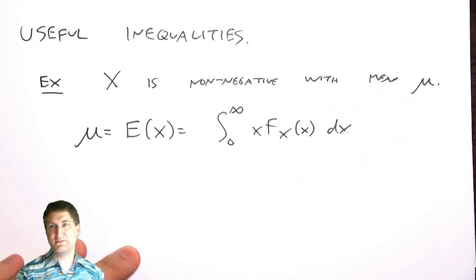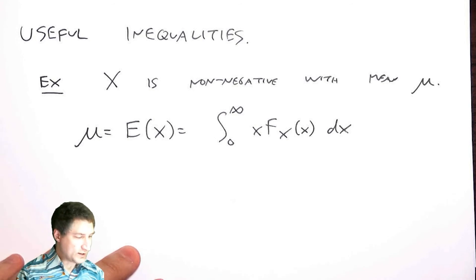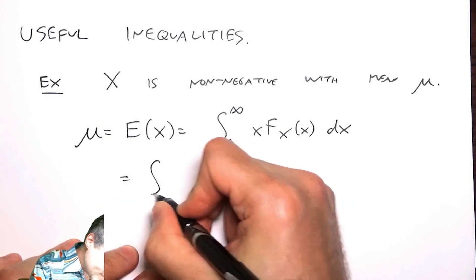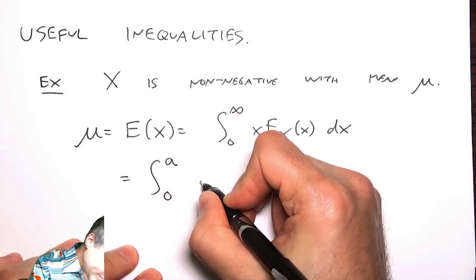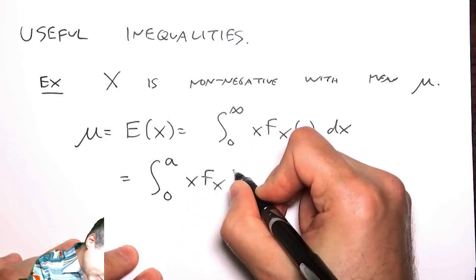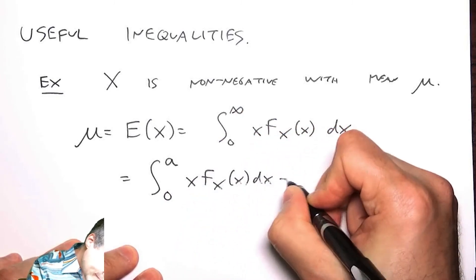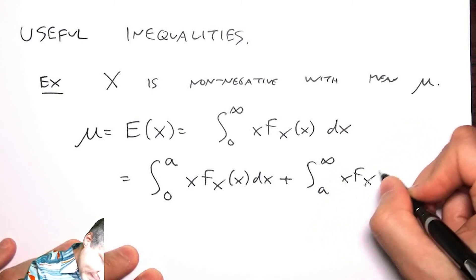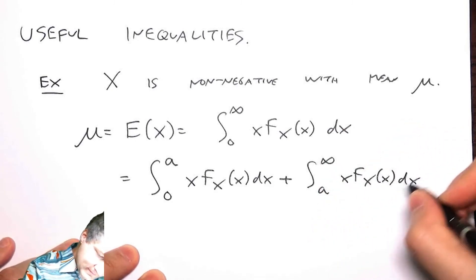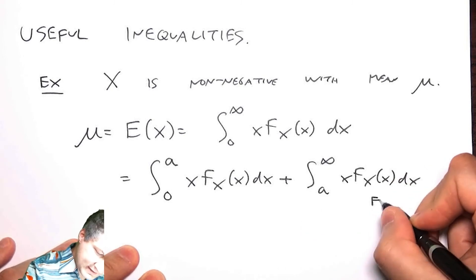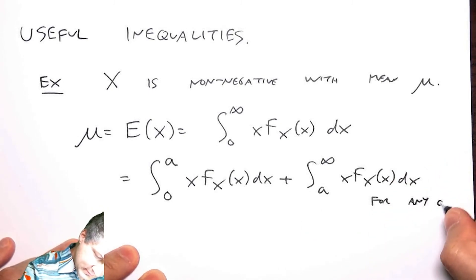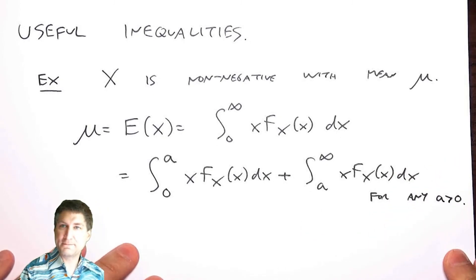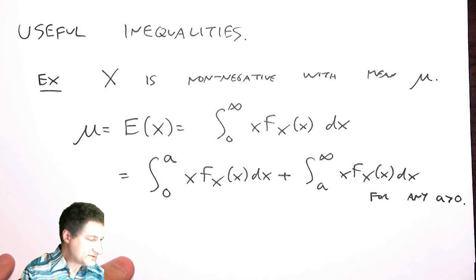I can write this in two pieces, right? I'm just going to split up for some positive value of a, so for any positive value of a.